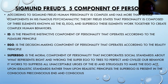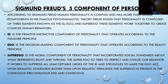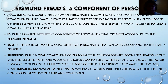The Ego is the decision-making component of personality that operates according to the reality principle. The Superego is the moral component of personality that incorporates social standards about what represents right and wrong. The Superego tries to perfect and civilize our behavior — it works to suppress all unacceptable urges of the Id and struggles to make the Ego act upon idealistic standards rather than realistic principles. The Superego is present in the conscious, pre-conscious, and unconscious of a person.